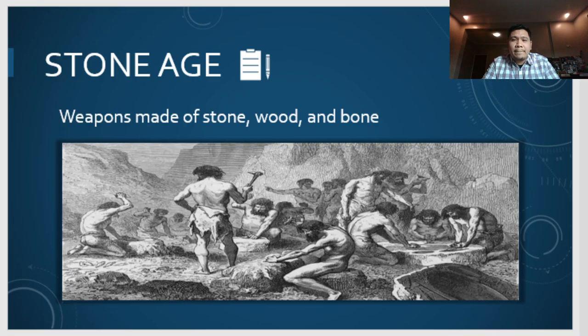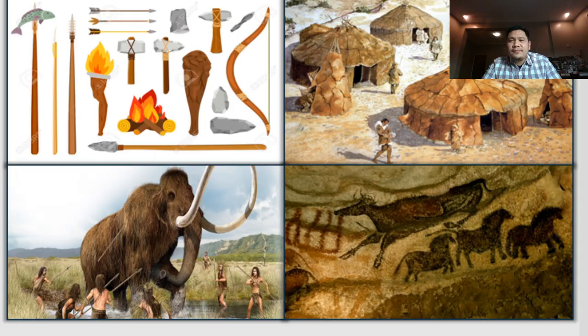So let's start with the Stone Age. Weapons were made up of stones, wood, and some bones — the bones coming from animals. Some examples of weapons they used before include spears, axes, and clubs.